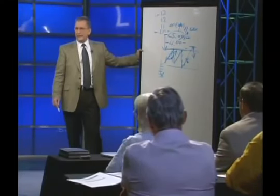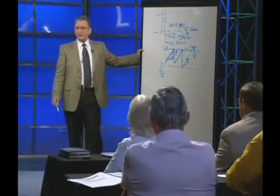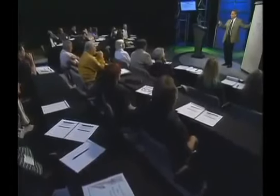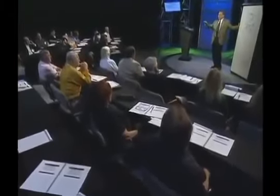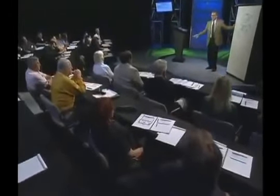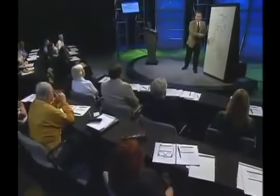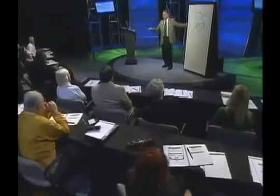Technical methodologies will tell you what will happen over a series of trades on a percentage basis. This particular pattern will emerge X number of times and when it does, there's a higher probability of this happening than that. If I limit my risk when I take the trade and my profit potential is at least one, two, or three times greater than what I need to risk, then over a series of trades I will be a consistent winner. That's what trading is all about as a passive technical trader.